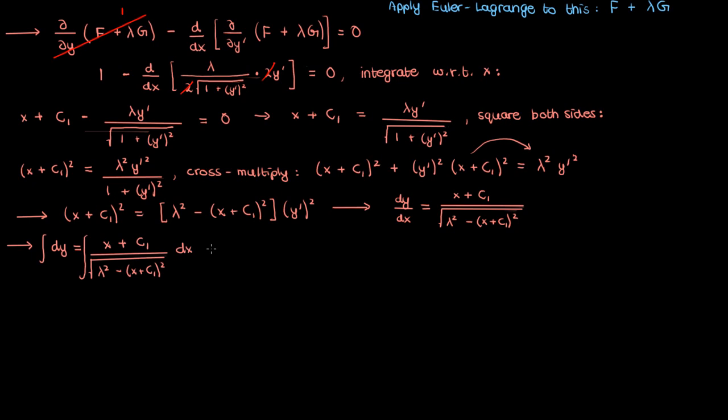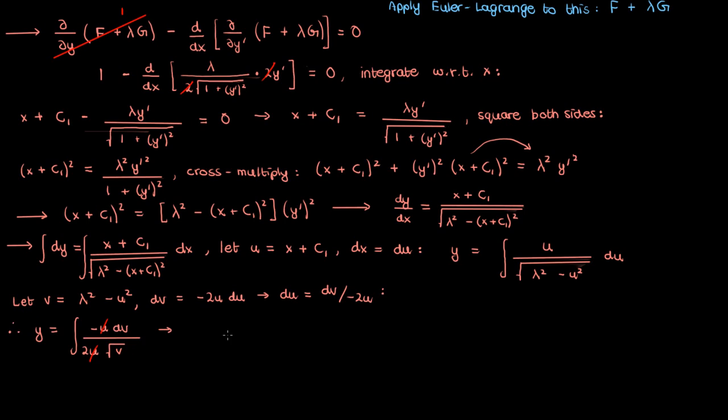We'll start by letting u equal x plus c1. In that case dx is just du if we differentiate u with respect to x and then if we make the u substitution the x plus c1 just gets replaced by u and our integral ends up looking considerably cleaner. From this integral we now have to do another substitution which could be a trig substitution because of the square root term like you could let u now equal lambda times sine theta or cosine theta since it's the square root of something minus our variable squared. However instead of needlessly complicating things we'll let another variable v equal lambda squared minus u squared. In that case dv is just negative 2u du which would make du equal negative dv over 2u. When we make the second substitution to put everything in terms of v here's what we'll get. Now the u's cancel and when we take the negative one half outside this is what we get.